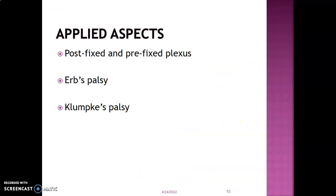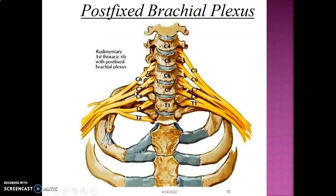For the applied aspects, there is postfix and prefix brachial plexus. Normally the brachial plexus is C5–T1. Postfix is when T2 contributes to the brachial plexus and it begins at C6, making it C6–T2. Prefix is when C4 contributes, making it C4–C8.